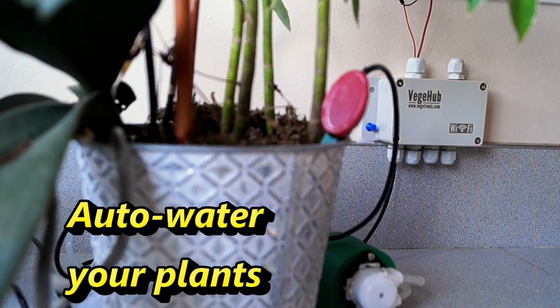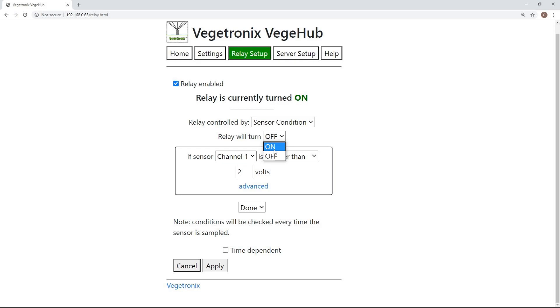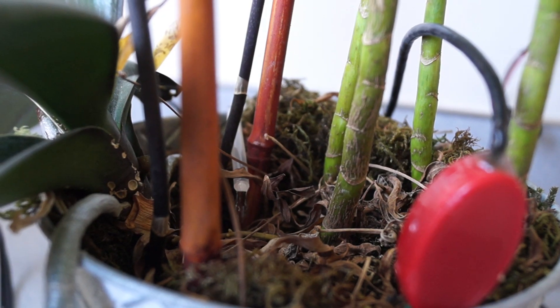When paired with a relay controller, such as the Veggie Hub and a moisture sensor, it is easy to automatically feed and water your plants.